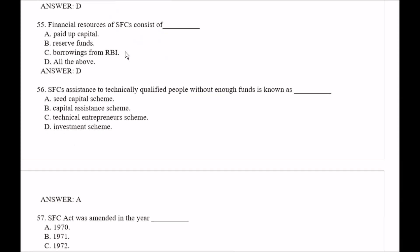Question number 55: Financial resources of SFCs consists of — Option A, paid up capital; Option B, reserve funds; Option C, borrowing from RBI; Option D, all of the above. The right answer is Option D, all of the above.